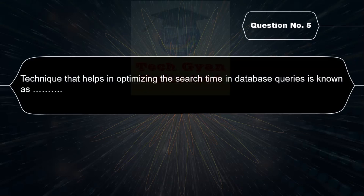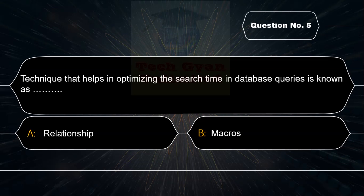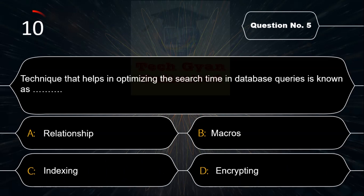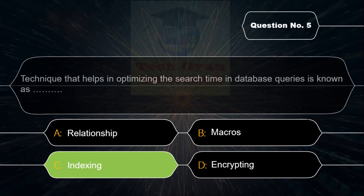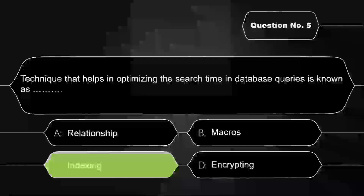The technique that helps in optimizing the search time in database queries is known as: Option A: Relationship, Option B: Macros, Option C: Indexing, Option D: Encryption. Correct answer is Option C — Indexing is the technique that helps in optimizing the search time in database queries.